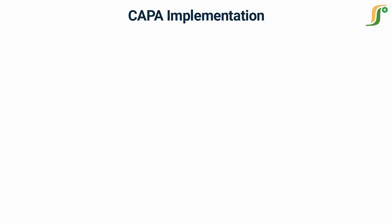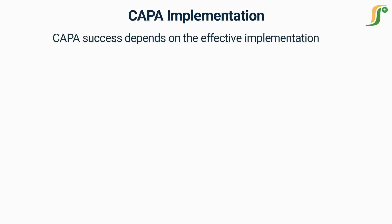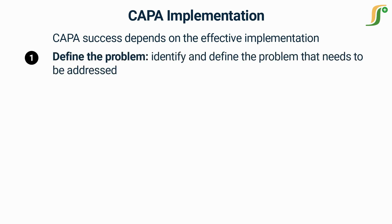CAPA is an important part of any quality management system and its success depends on the effective implementation of several key steps. The first step is to define the problem. This includes identifying and defining the problem that needs to be addressed, understanding the root cause, and all of the factors that contribute to it.